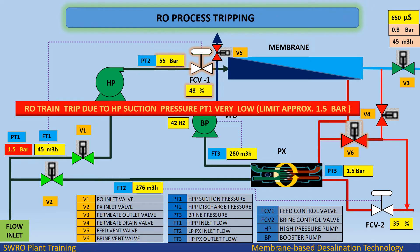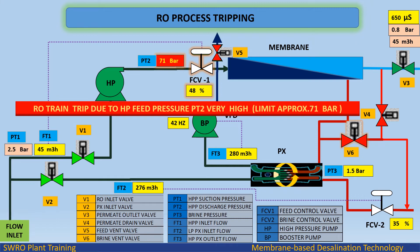RO train trip due to HP suction pressure PT1 very low, limit approximately 1.5 bar. RO train trip due to HP feed pressure PT2 very high, limit approximately 71 bar.